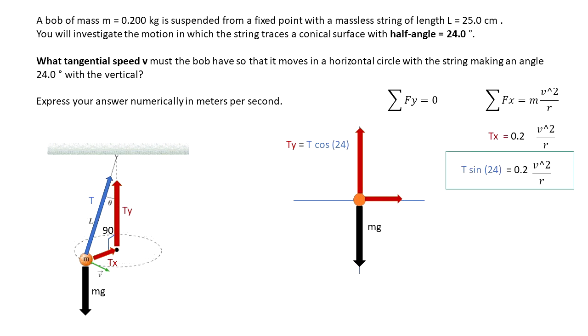So, if I do the summation of the forces in the x, it's equal to mass times v squared over r. So, you see, I have Tx in red. It's equal to 0.2, that's the mass of the ball, times the velocity, the tangential velocity squared over the radius.